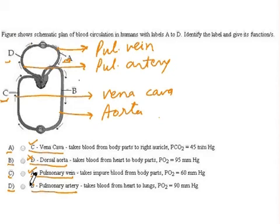Now out of the given labels, let us check the functions of these blood vessels. Vena cava brings blood from the body parts to the right auricle. This is the right function, and as it is bringing blood from the body parts, the PCO2, that is partial pressure of carbon dioxide, should be high, and it is 45 here, so this is high.